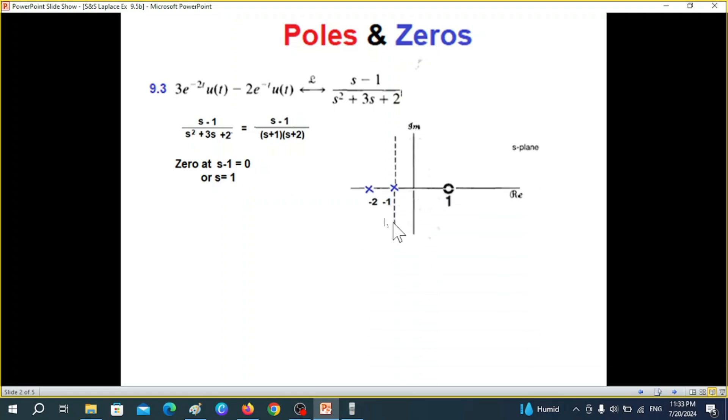So let's see this graph and at s equal to one we are putting a zero circle representing zero. Now the pole part, the denominator part s plus one equal to zero, that means s is minus one and similarly the other one is s is minus two.